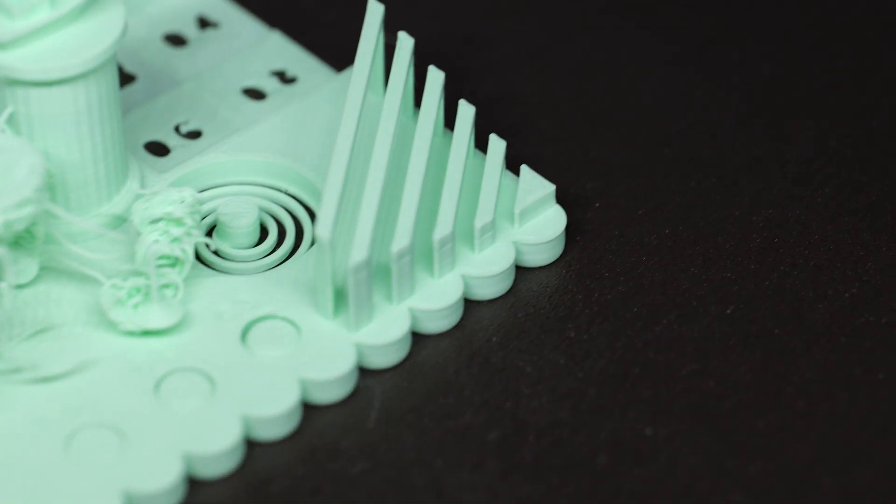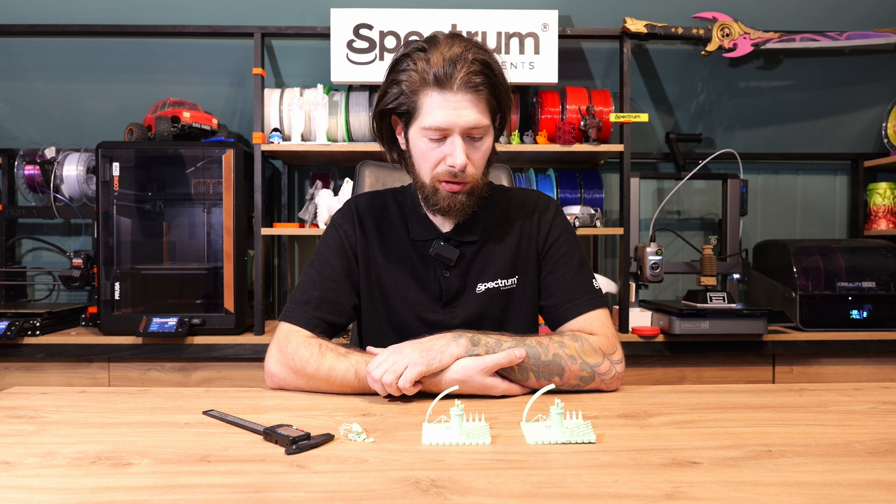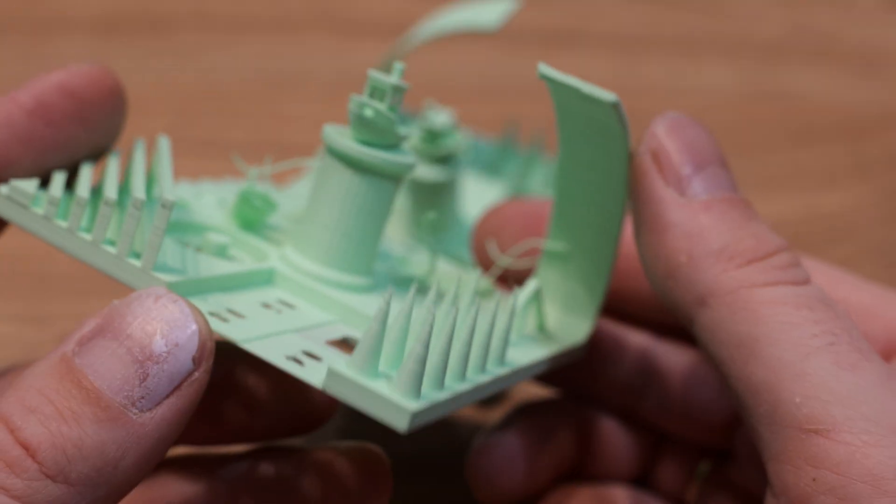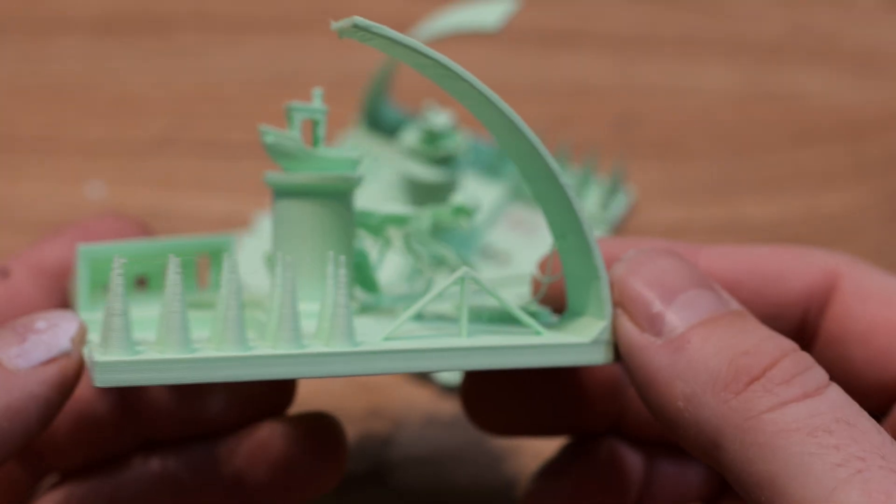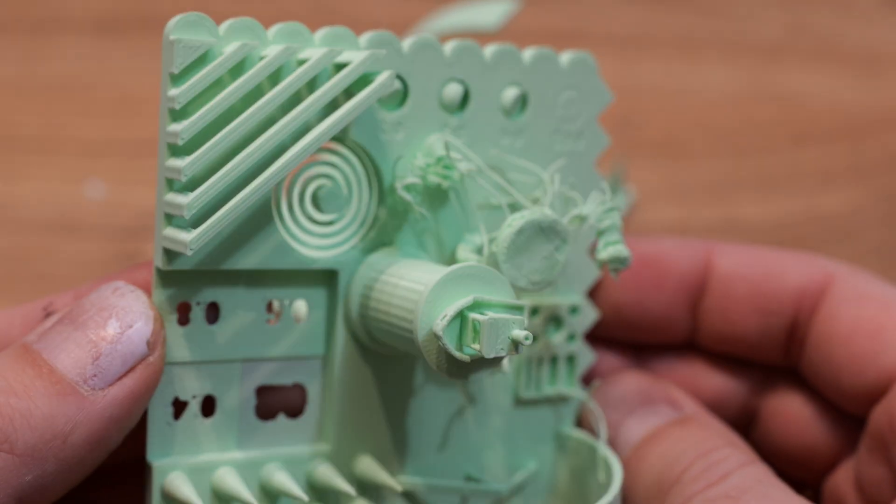So basically we have almost the same results. But of course Core 1 it's a little bit different printer. It's a Core XY. So it has some benefits from it. Like the better cooling on the overhangs. So I think it was failing on 65 or 70 degrees instead of 45.